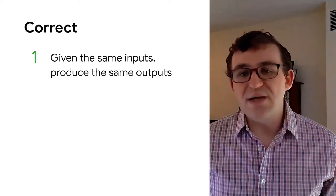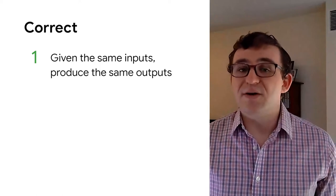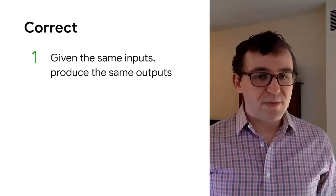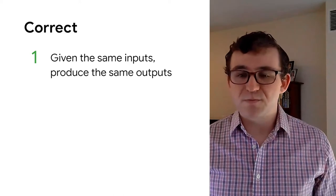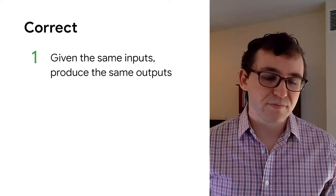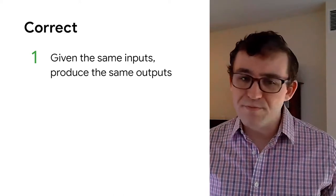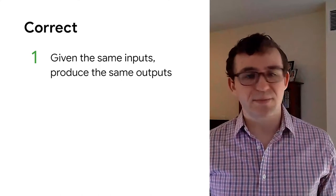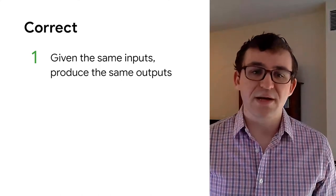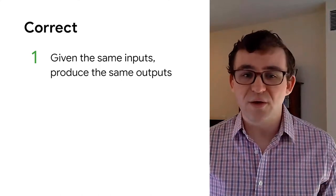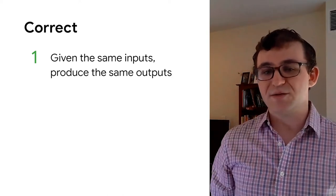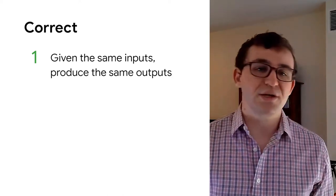Now, correctness is a lot simpler to define. Correctness from a build system simply means that given the same inputs, you're going to produce the same outputs. And Bazel's entire design is based around these principles. Fast and correct are not only goals, but they're core assumptions made in Bazel, and they help reinforce each other.